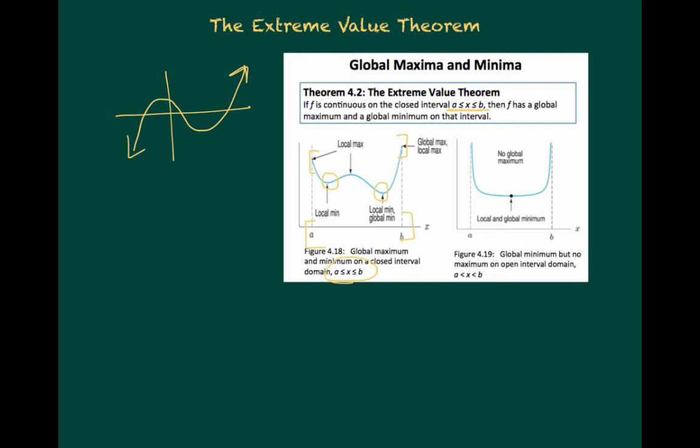Now, in the second example, figure 4.19, that's an open interval. So A and B are not included. You can see that there is a global minimum in the interval. But since the endpoints are not included, there is nowhere to say it has a global maximum. So the open interval has no global maximum. The extreme value theorem is only for closed intervals.